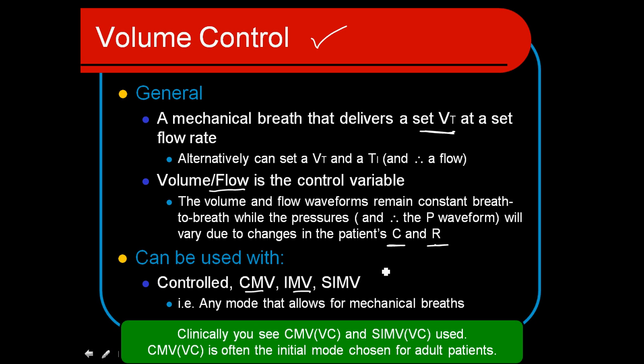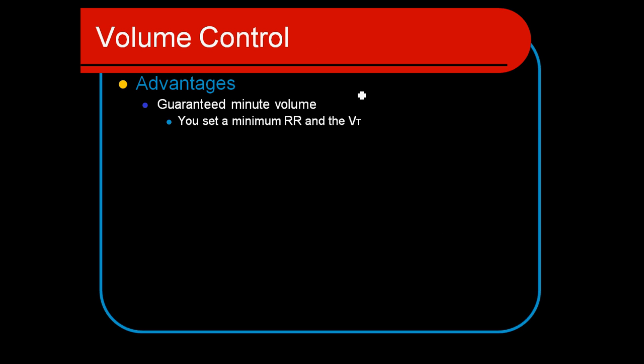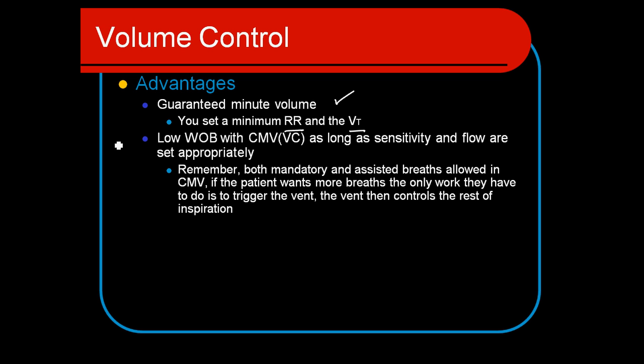This is a very good mode to use with patients that we don't know much about. So when we first get a patient in emergency, we don't know anything about their lung characteristics. We can put them on this mode and be assured that we've got a set minute ventilation. By setting the respiratory rate and the tidal volume, we're assuring that our patient's getting a nice precise minute ventilation to control their blood gases. We also hope that it will decrease our patient's work of breathing, particularly in the mode of CMV.